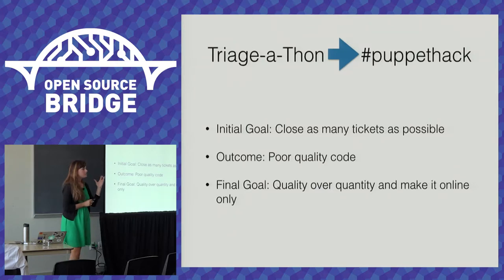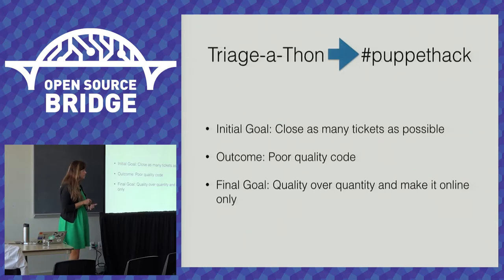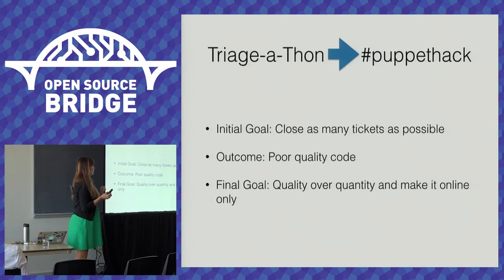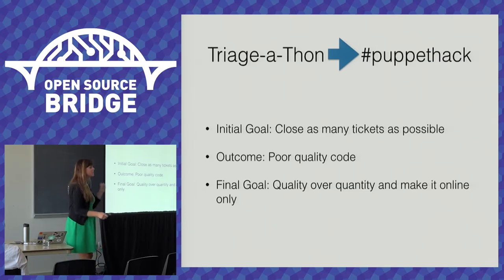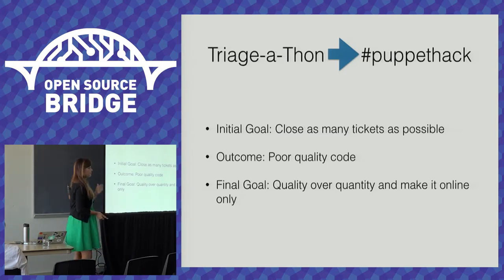An example of how we've used feedback at Puppet: we had an event called Triageathon about triaging tickets. We had a huge ticket backlog, and the goal was to close as many tickets as possible with a leaderboard and raffles. But afterwards our engineers had to reopen all these issues because the code was terrible — it really backfired on us.